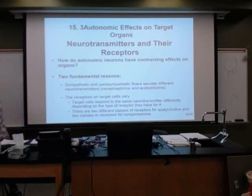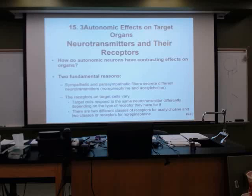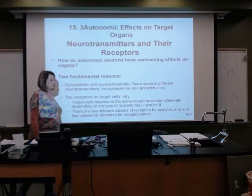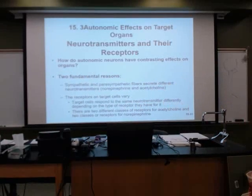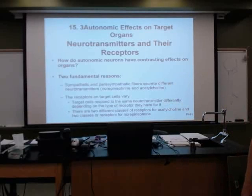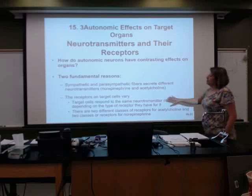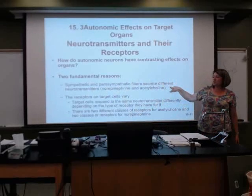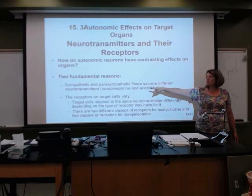Dealing with the autonomic nervous system, just like we did in other systems, we have neurotransmitters — the product that these neurons make. So how is it, based on what we know now, that sympathetic and parasympathetic can have these contrasting effects? How can one gear up the system and one slow it down? The two divisions, the sympathetic and the parasympathetic, secrete different neurotransmitters.